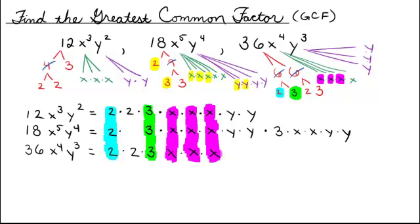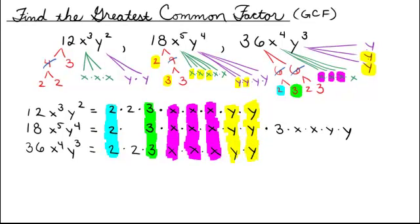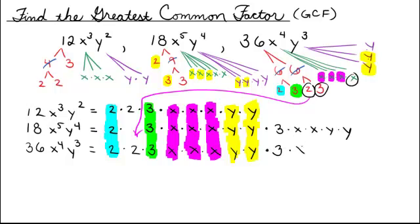I've also got some y's. It looks like I'm only going to have two possible common y factors here — I've got a pair of y's from the first term and a pair of y's from the third term, so just two y's will be part of the GCF. Then I'll write down the leftover factors: I already wrote the leftover two, so I won't copy it again. I'll write down the leftover three, the leftover x, and the leftover y.